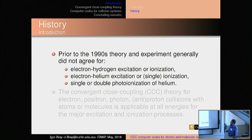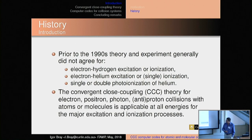Prior to the 1990s, there were major discrepancies between theory and experiment for elementary collision processes, such as electron-hydrogen excitation and ionization. It turned out the experiment was wrong for excitation — that stopped progress for a while. Also electron-helium, single and double photoionization of helium. That was the reason the convergent close-coupling method was developed, and now it's valid for electron, positron, photon, proton, or anti-proton collisions with atoms and molecules, applicable at all energies for the major excitation and ionization processes.